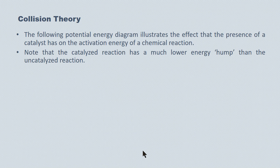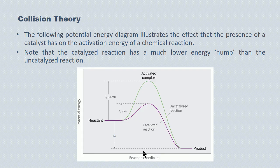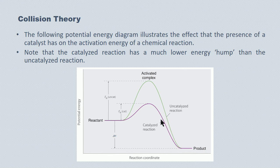Here's a potential energy diagram that illustrates this effect. The activation energy hump is much lower with a catalyst present. The green curve represents activation energy for the forward reaction with no catalyst present, whereas the purple curve — a much lower activation energy — represents activation energy with a catalyst present. Because the energy requirement has been lowered, more collisions are going to have enough energy to react at the same temperature when a catalyst is present.